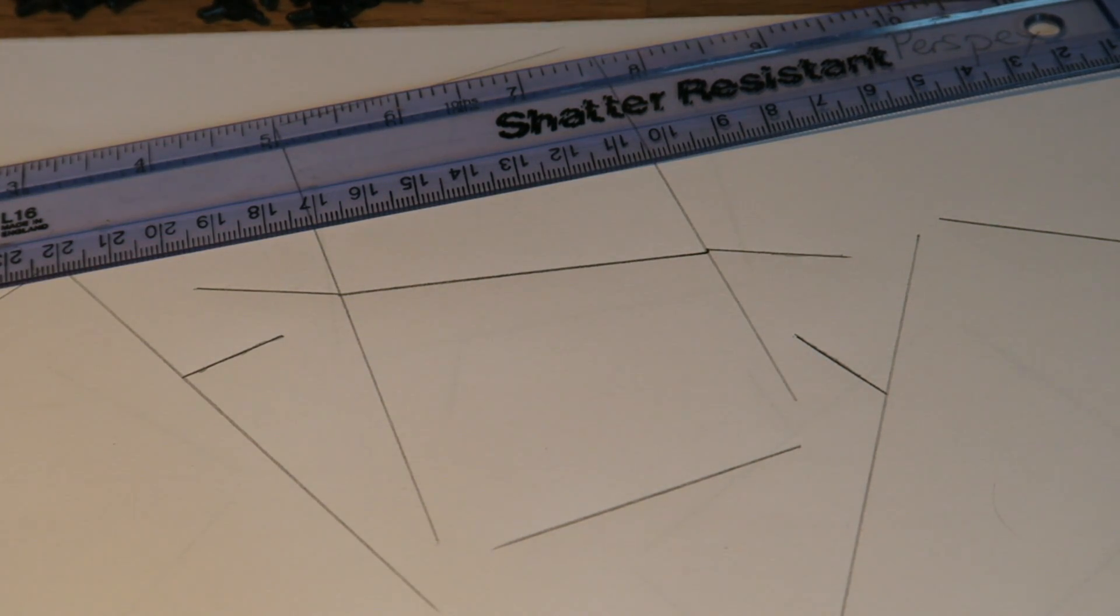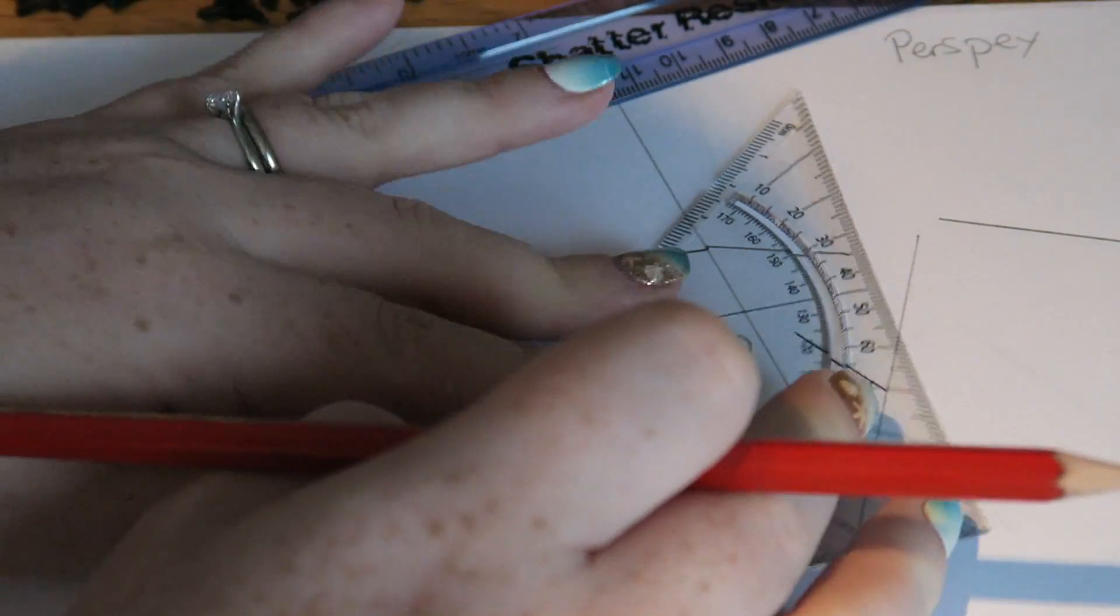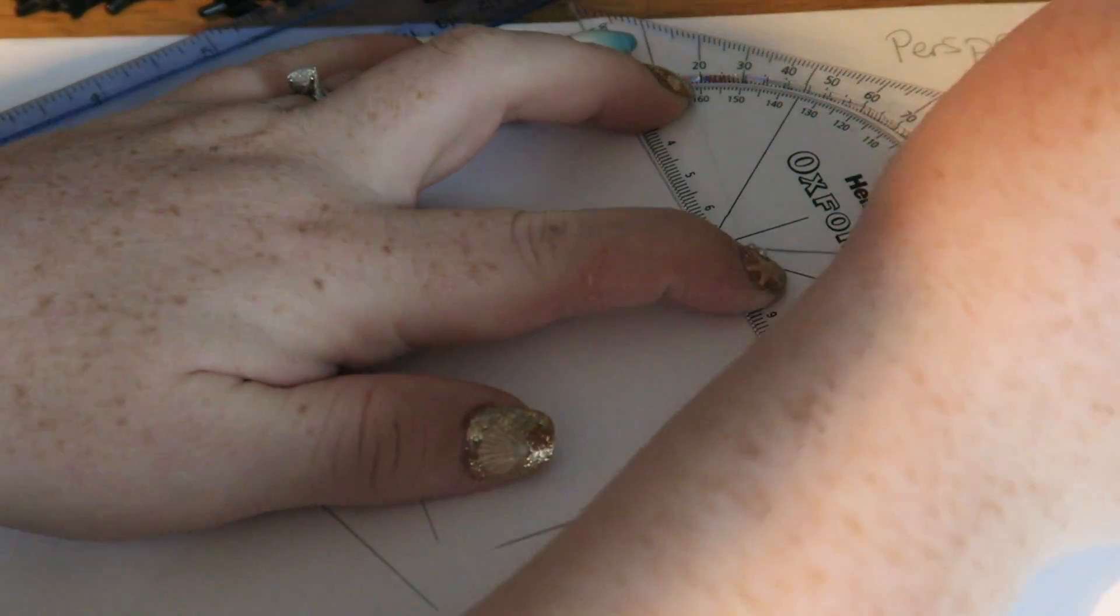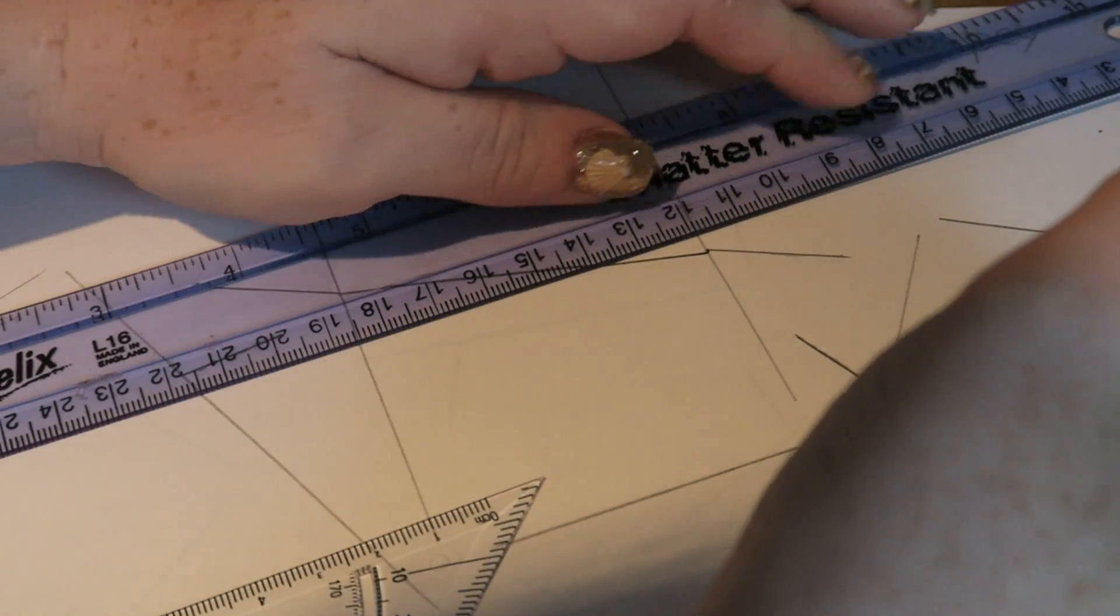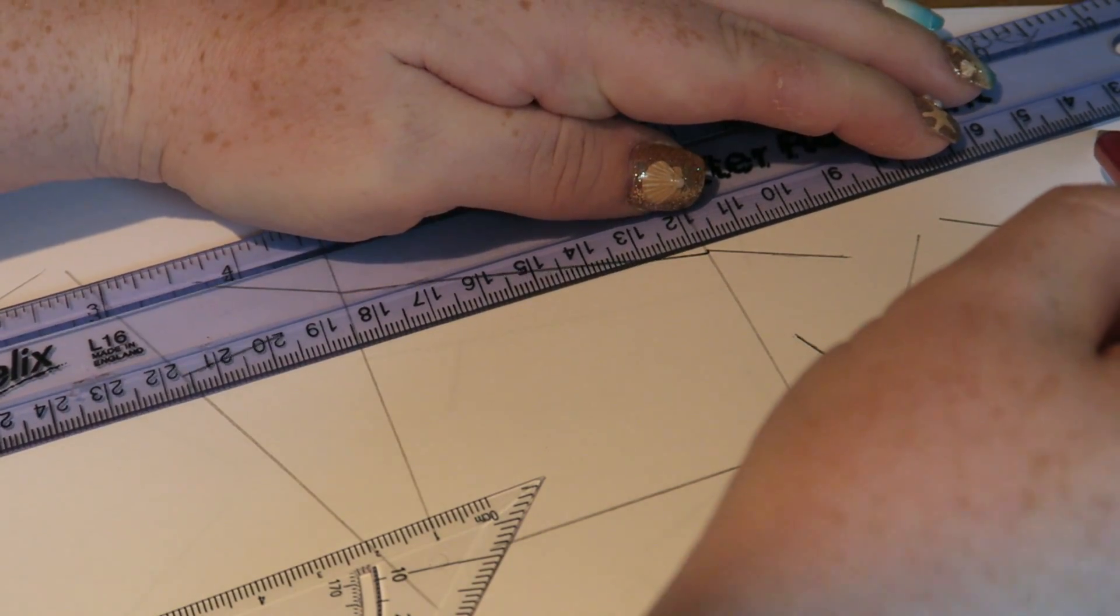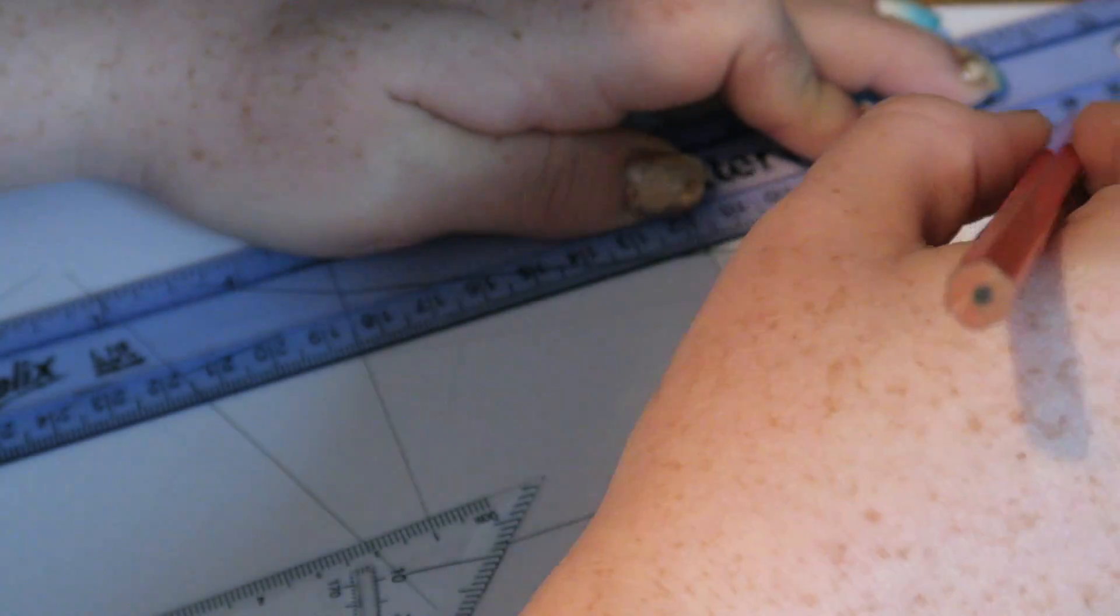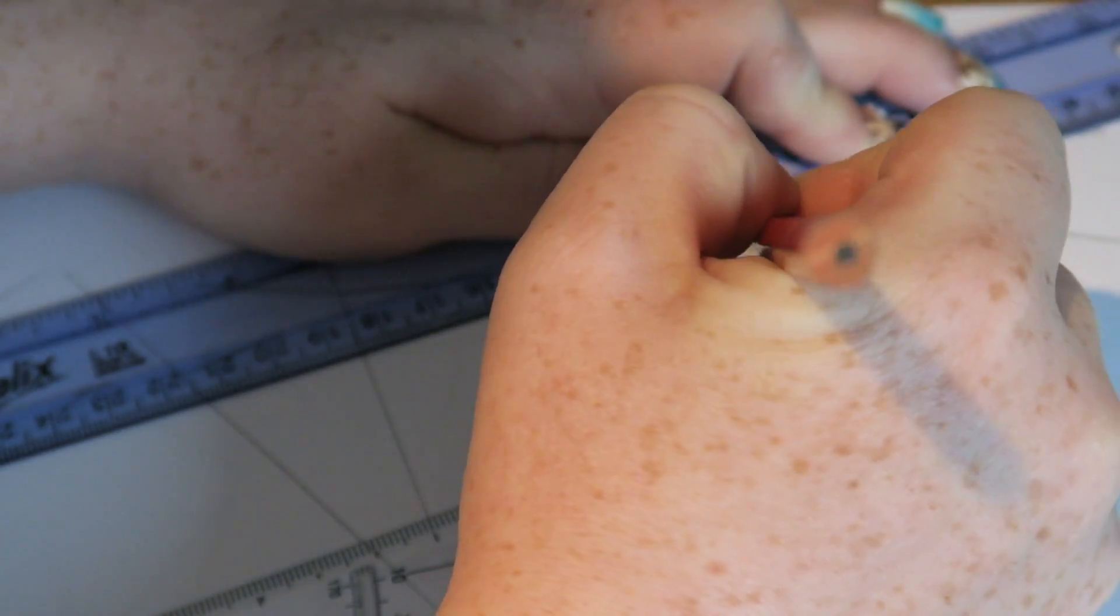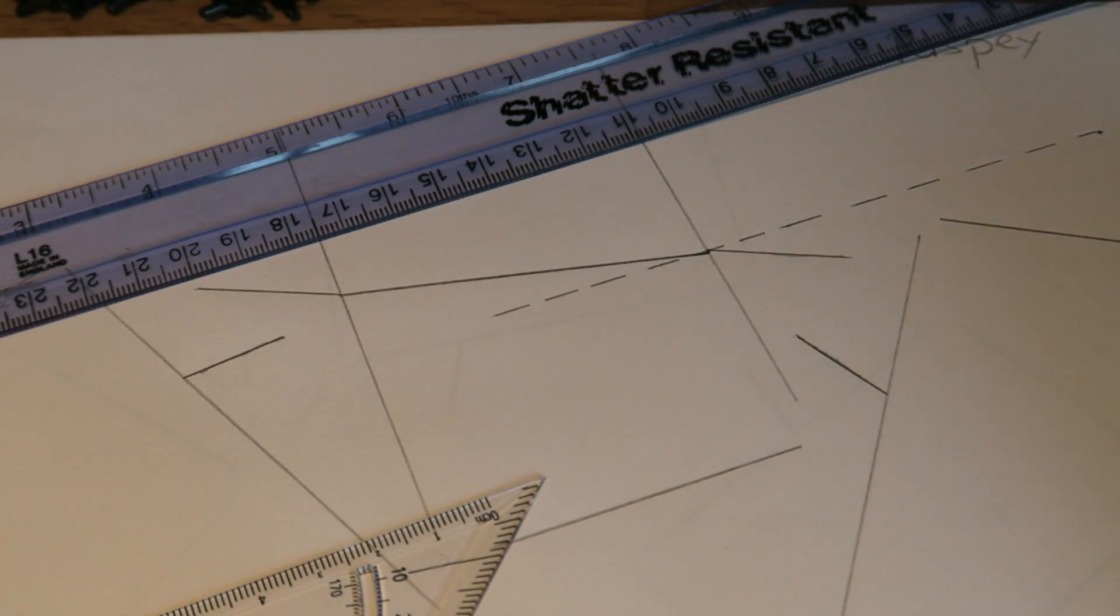So we can now see the path that the light took as it went in. What I need to do now is draw on my normal. So with my protractor, I'm going to line my protractor up there, I'm going to put a point at 90 degrees. Then I'm going to join that up, and I'm going to join it up with a dashed line. This is my normal.